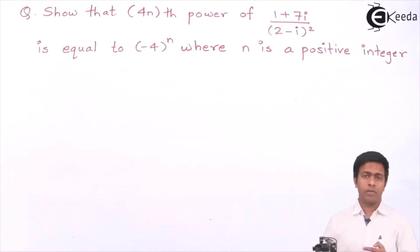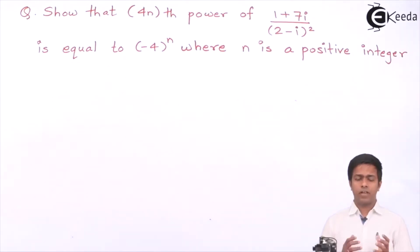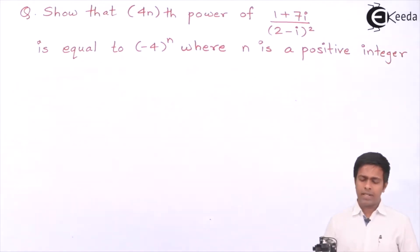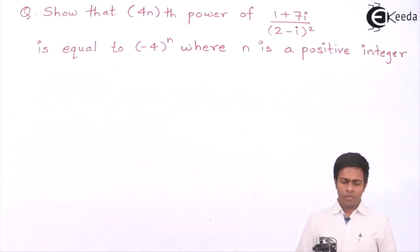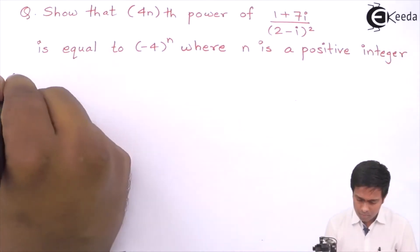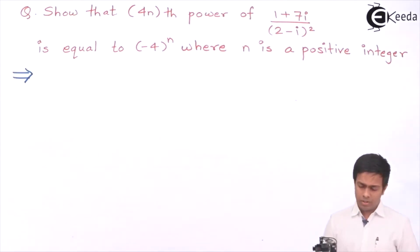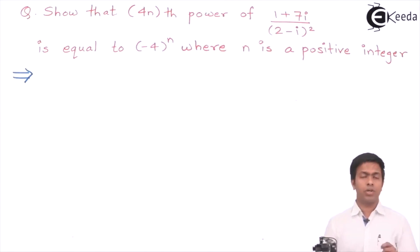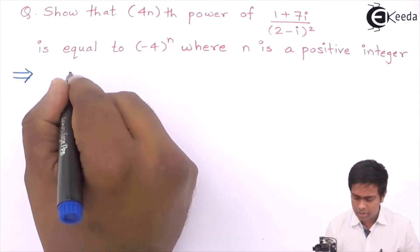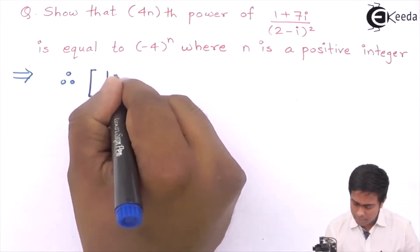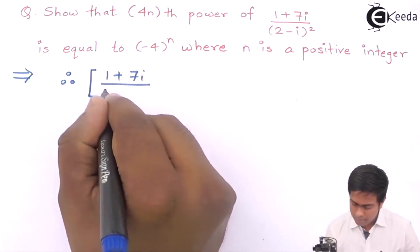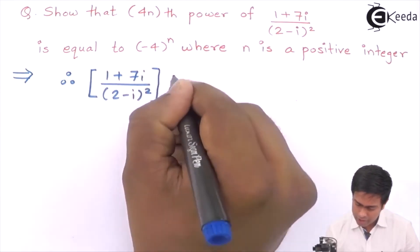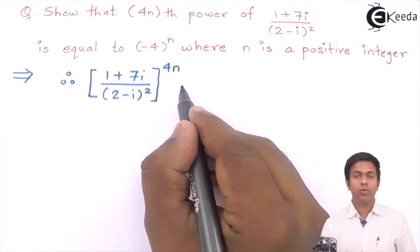We have two tasks: first, convert the given number into standard form; then convert that standard form into polar form, and finally apply De Moivre's theorem with power 4n. So we want to prove that [(1 + 7i) / (2 - i)²] raised to 4n equals minus 4 raised to n.